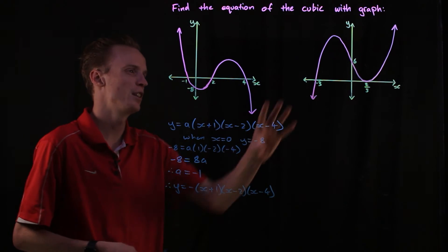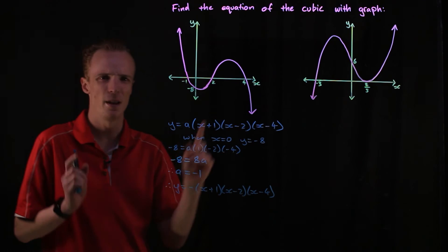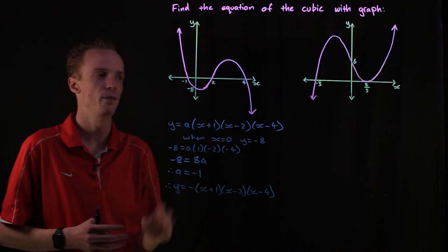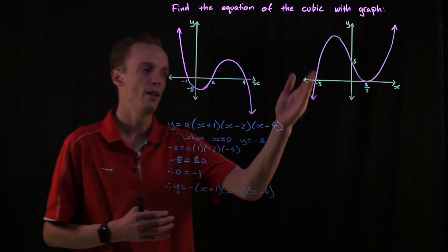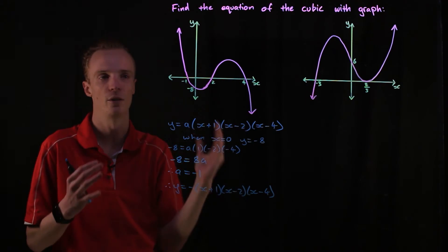So that there is the equation that represents this cubic polynomial. Moving on to the next one, what's different about this one is it's got a repeated root as well as a linear root where it's just cutting through.